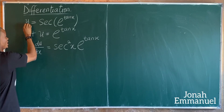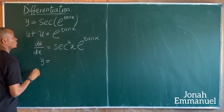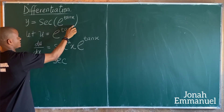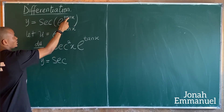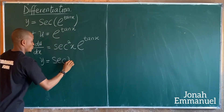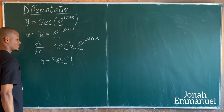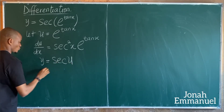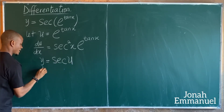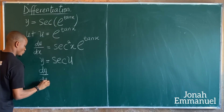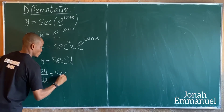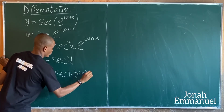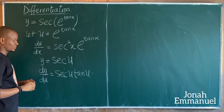Now y equals sec of u. Differentiating y with respect to u gives dy/du equals sec u times tan u, from the standard differentiation rule.